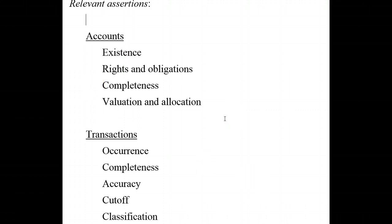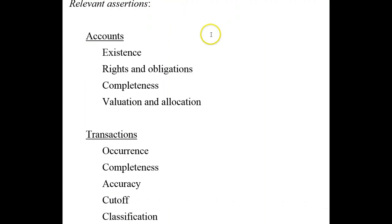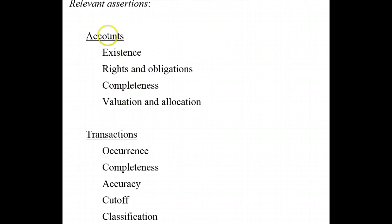Relevant assertions are those that, without considering the effect of controls, could have a reasonable possibility of containing a misstatement that could cause the financial statements to be materially misstated. Not all assertions apply to all financial statements. Listed here are those relevant assertions that apply to each of the individual account types of financial statements.